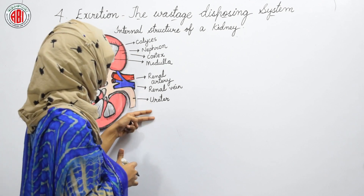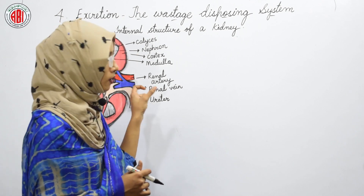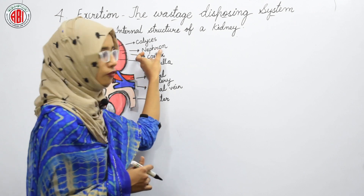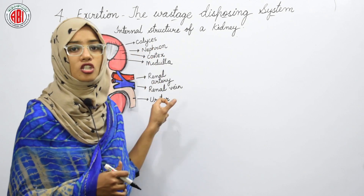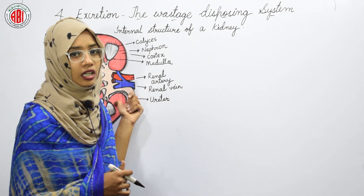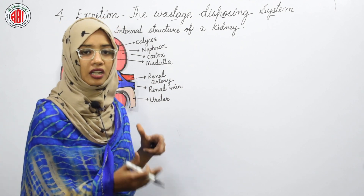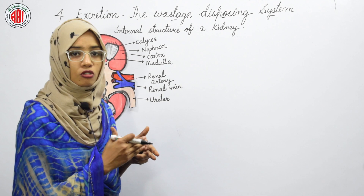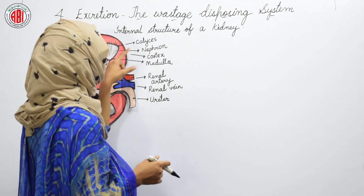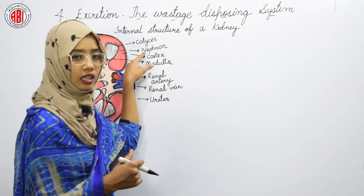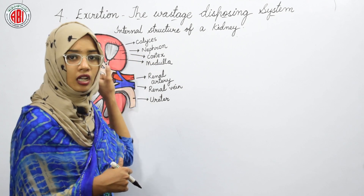All these parts appear in the kidney, but the most important part is the nephron, because the nephron is the functional unit of a kidney. Whatever purification of blood takes place — the separation of waste material from it — the nephron will do that. That is why we call it the functional unit of the kidney.